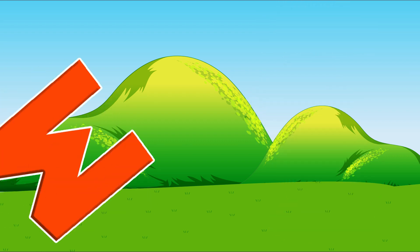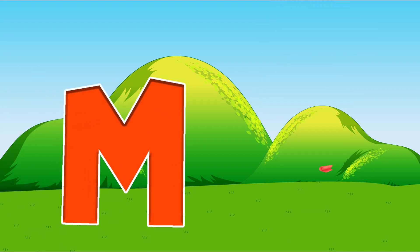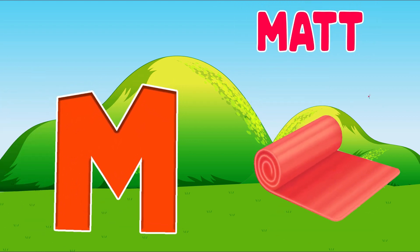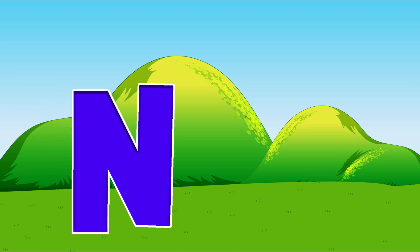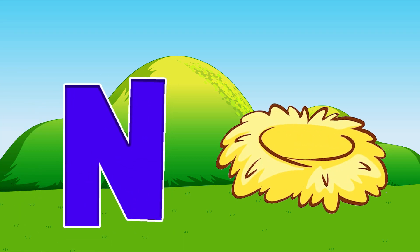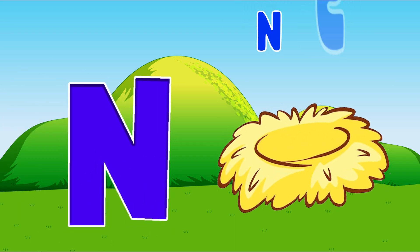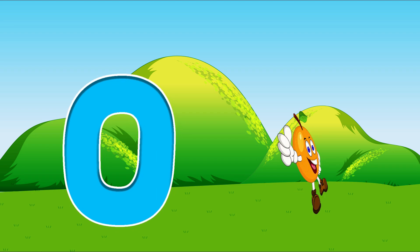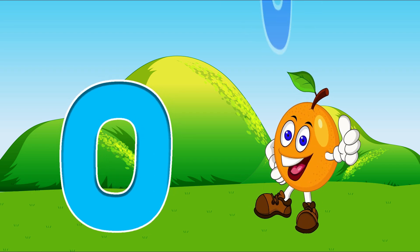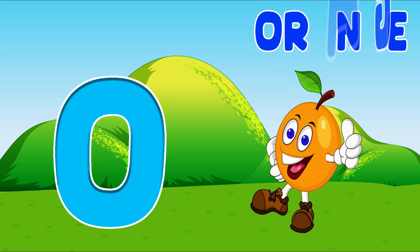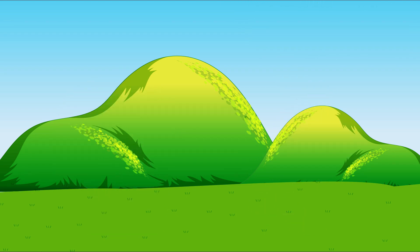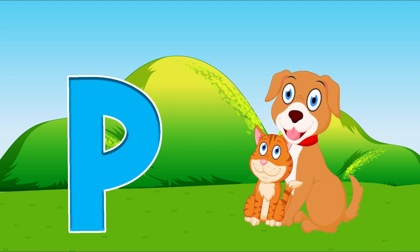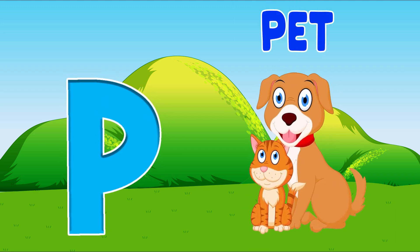M is for mat, M-m-mat. N is for net, N-n-net. O is for orange, O-o-orange. P is for pet, P-p-pet.